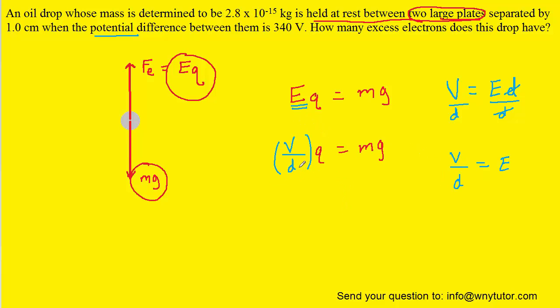Now at this point we can plug in some of the known values. We have the electric potential, which is symbolized by V, given to be 340 volts. We have the distance between the two plates, given as 1 centimeter. Note that you'll have to change that into meters by multiplying by 10 to the minus 2.